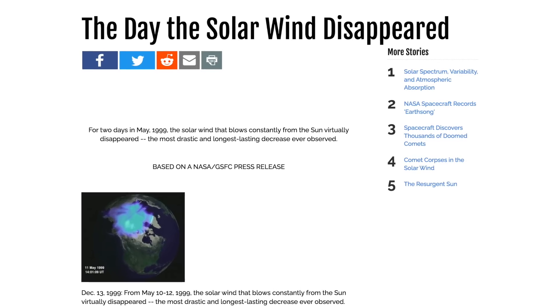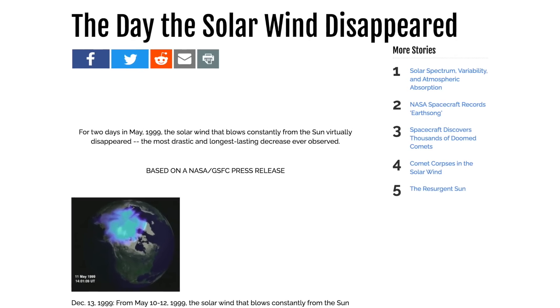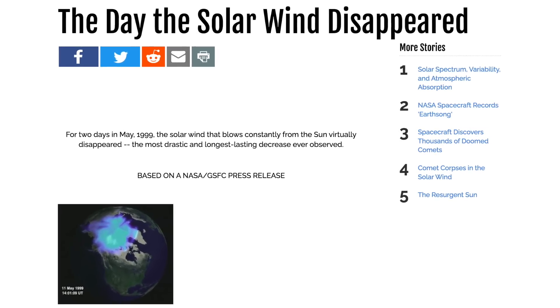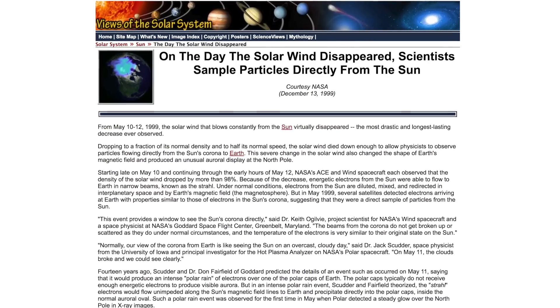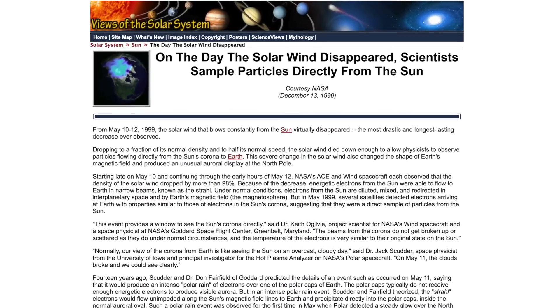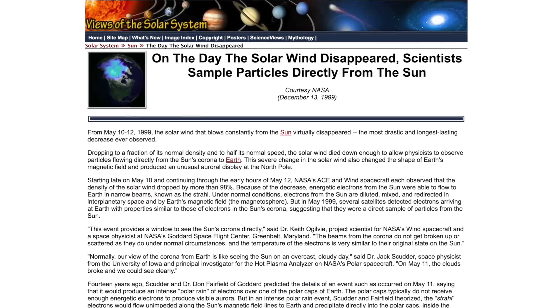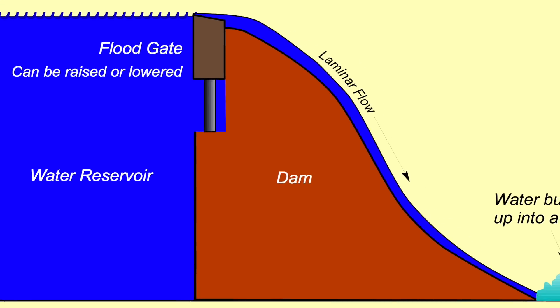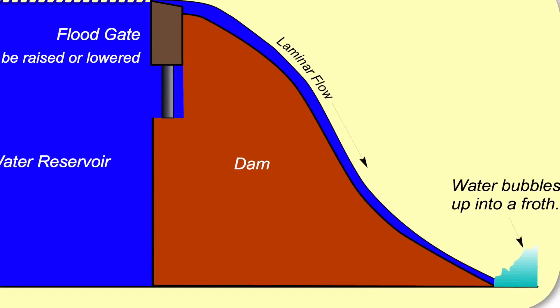The solar wind actually stopped for a day or two a few years ago. How? Why? Did somebody raise the floodgate and cut the water flow? Needless to say, the standard model has no explanation for this phenomenon, but the electric sun does. The higher the face of the dam, the greater the velocity of the water when it gets to the bottom. It's just that simple.